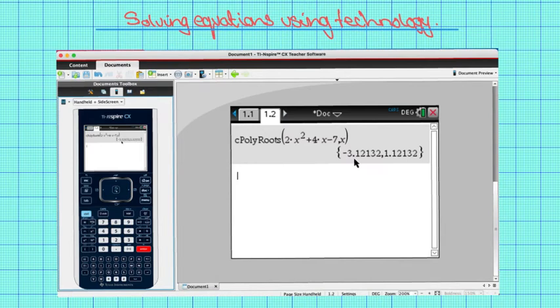Our first value to three significant figures is minus 3.12. Our second to three significant figures is 1.12.